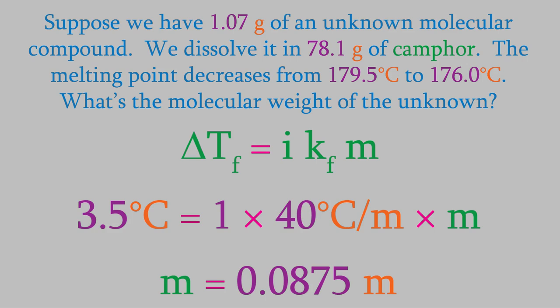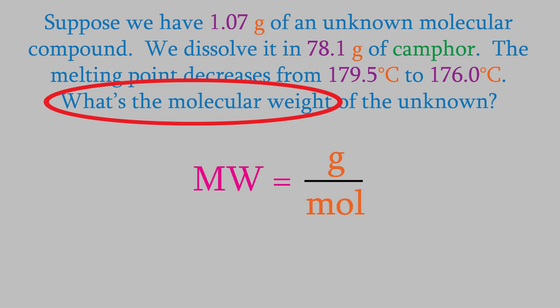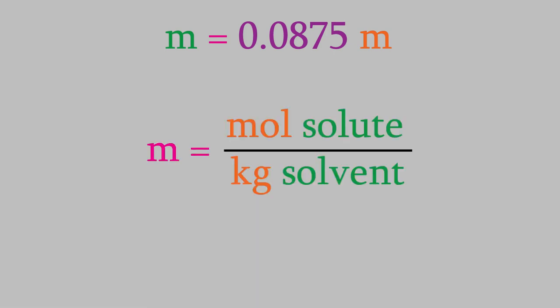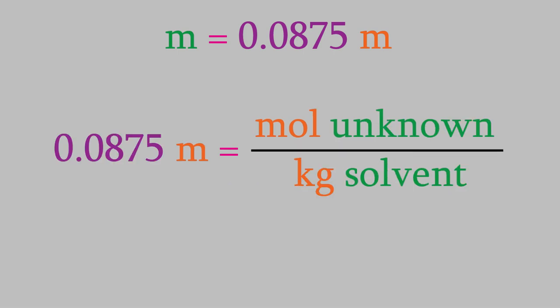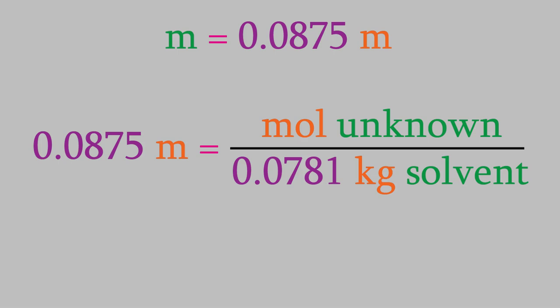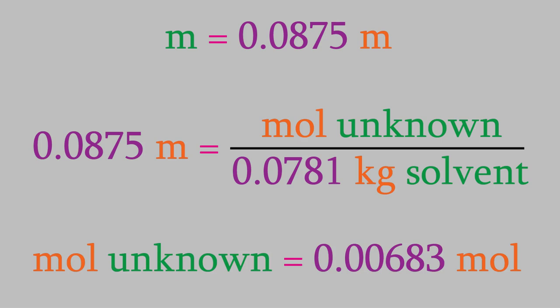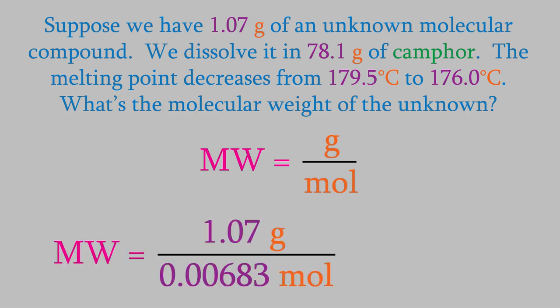The question asked us to figure out the molecular weight of the unknown. As you might remember, the molecular weight is measured in grams per mole. We already have the grams of our unknown. It's 1.07. So, we just need to know the moles. That's where the molality we just calculated comes in. You might remember that molality is the moles of solute divided by the kilograms of solvent. We just calculated what the molality is, and we know the kilograms of solvent, so we can find out the moles. We found out that the molality is 0.0875 M, and the problem tells us that we have 78.1 grams of the solvent, camphor. That's 0.0781 kilograms. When we solve for the moles, we get 0.00683 moles. So, now we can finally get the molecular weight. We divide the mass of the unknown by the moles, and we get 157 grams per mole. So, that's our molecular weight.